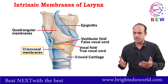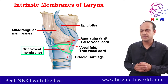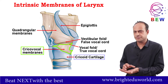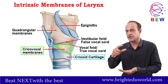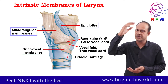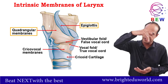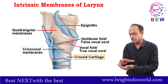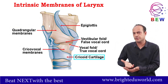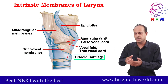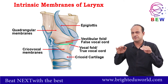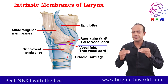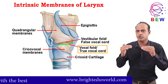The second is the crico-vocal membrane. As the name suggests, it starts from the cricoid — whereas the quadrangular membrane started from the epiglottis and came down, the crico-vocal membrane starts from the cricoid and goes up. Again like a curtain, but the upper end is free, and that free upper end forms the true vocal cord.